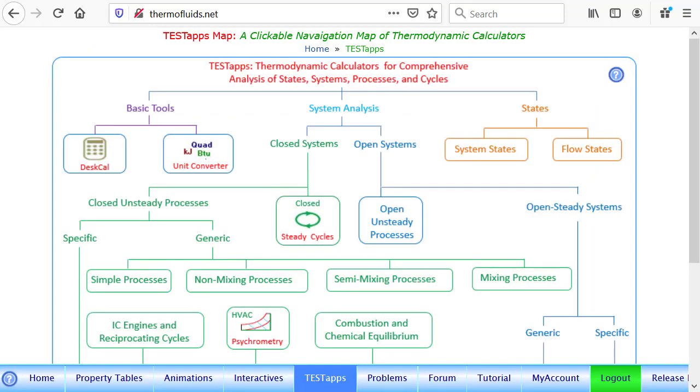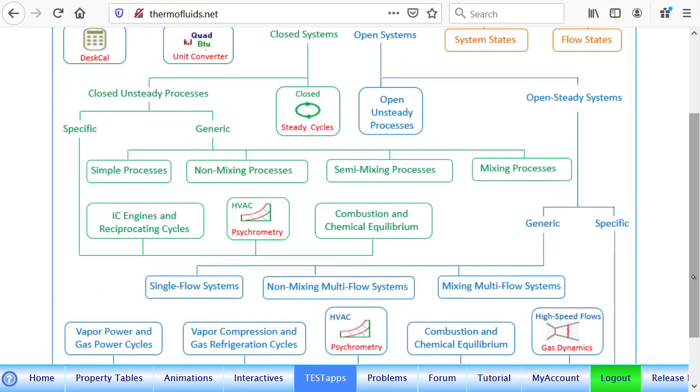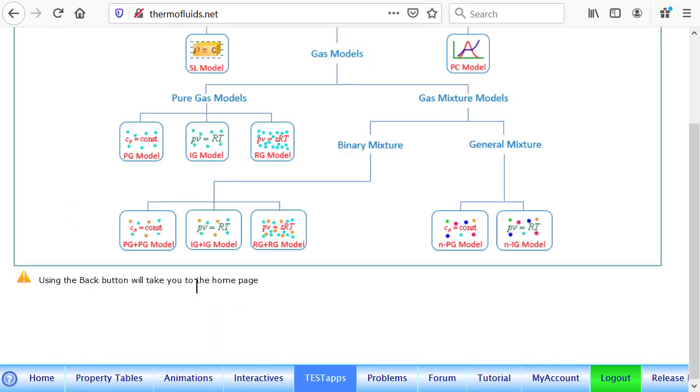Let me see if I can get a pen out. There we go. So system analysis begins in that branch: open system, open steady system. And then if we go to generic branch, let me wipe this out so that I can browse down.